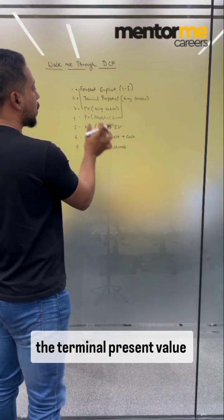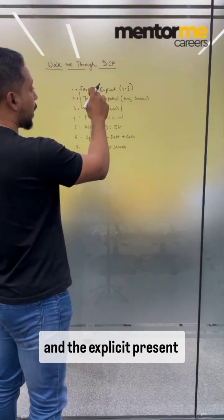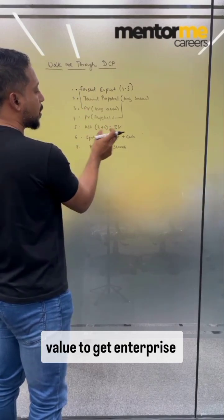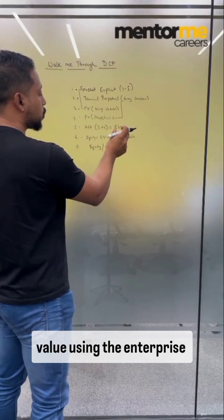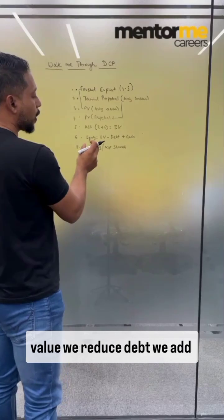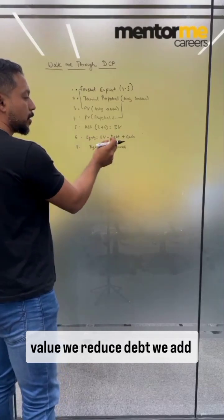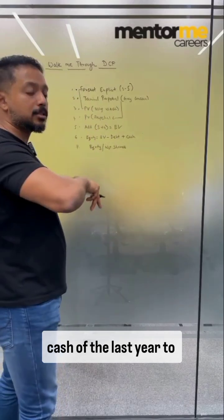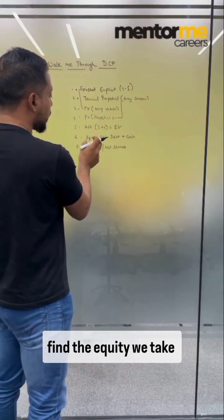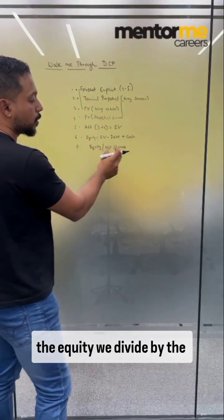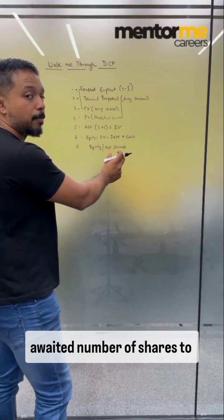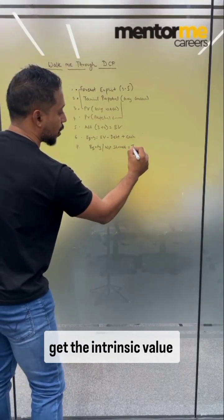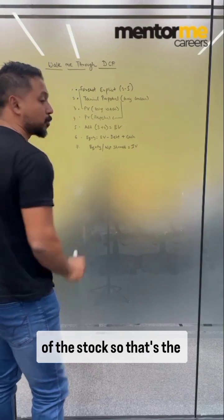We add the terminal present value and the explicit present value to get enterprise value. Using the enterprise value, we reduce debt and add cash from the last year to find equity. We then divide the equity by the weighted number of shares to get the intrinsic value of the stock.